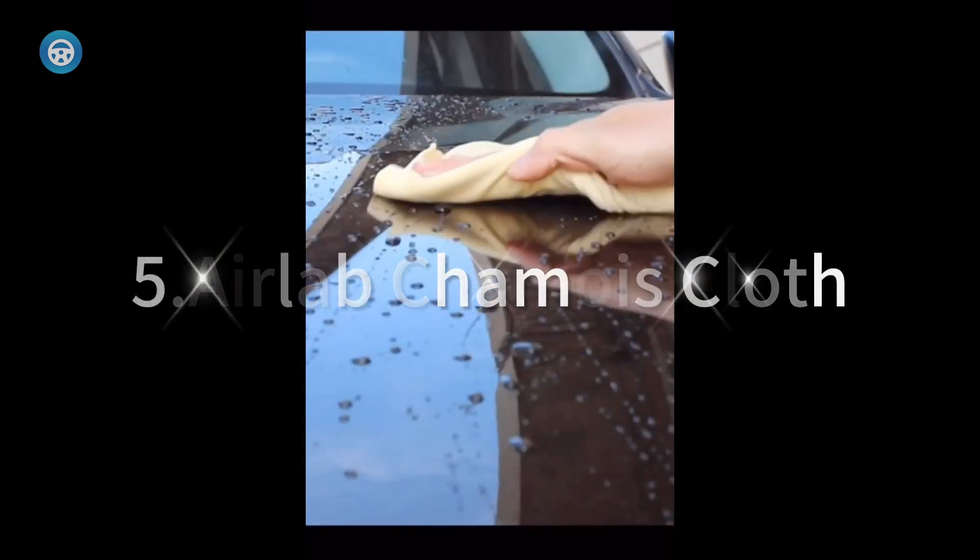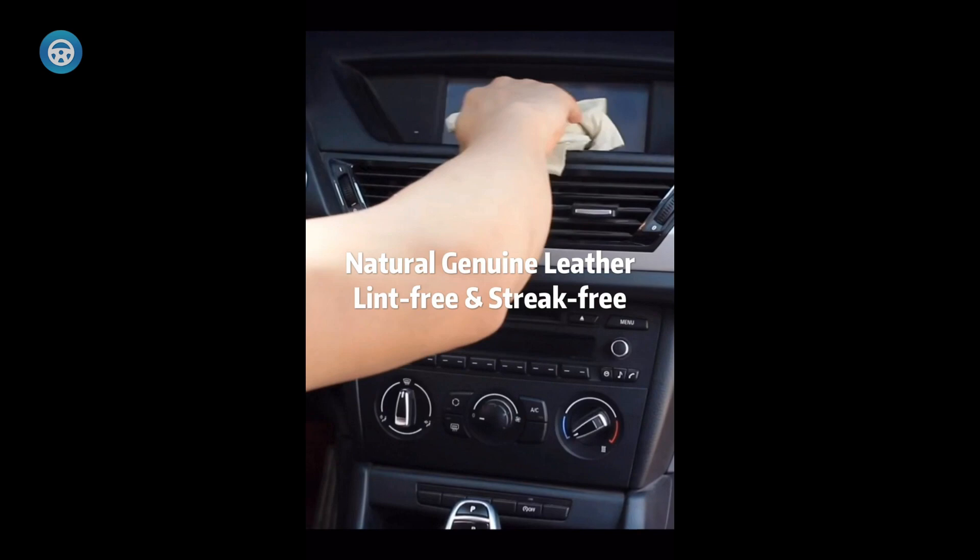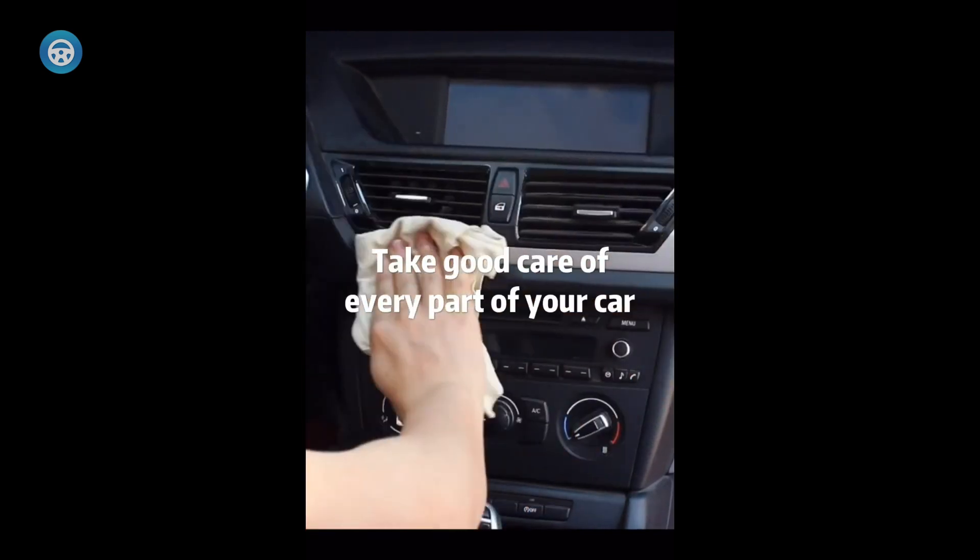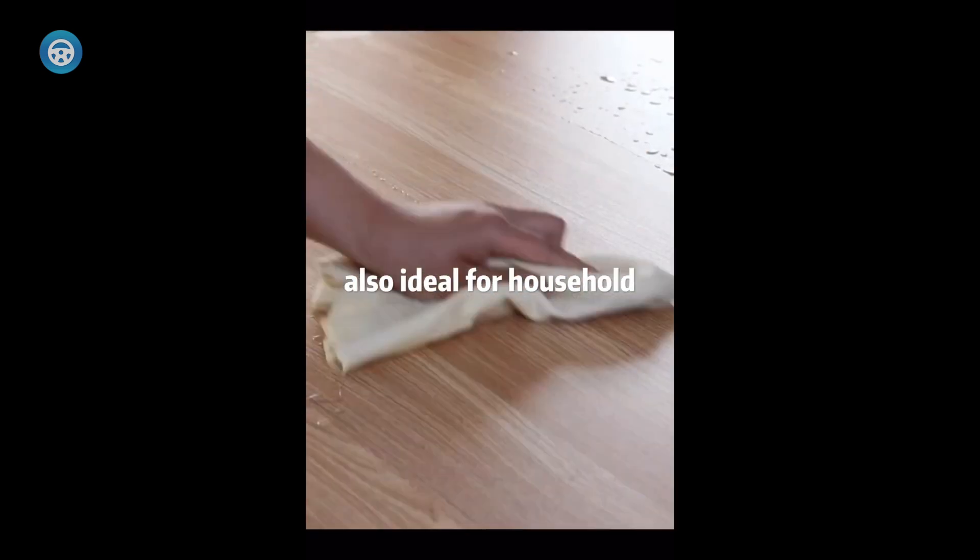AirLab Chamois Cloth: The AirLab Chamois Cloth is another quality chamois made of genuine leather. The manufacturers infused natural oils into the chamois to deliver a professional sheen and the ability to soak up water up to six times its weight without leaving streaks.